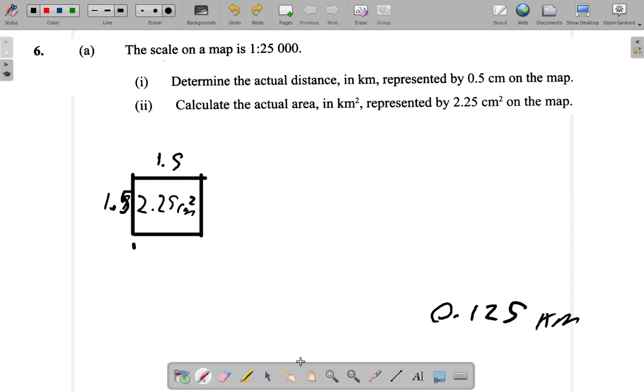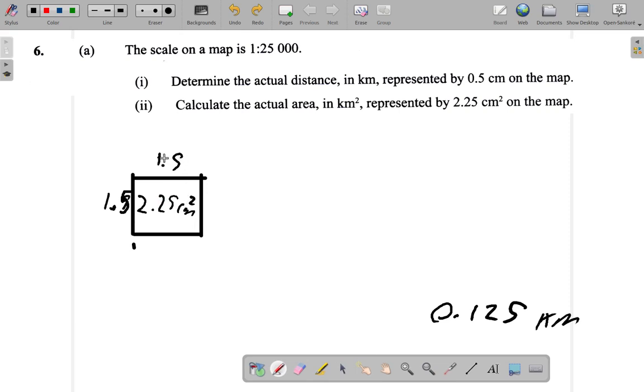Now, the question is, what is this length at the actual place? This is on the map, this 1.5 is on the map. At the place, the length of the square, or the width, will be 1.5 multiplied by 25,000. So 1.5 times 25,000 is, you should get 37,500 centimeters.